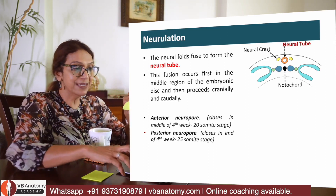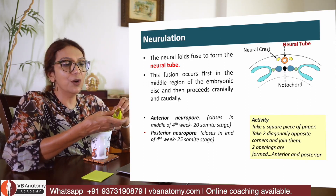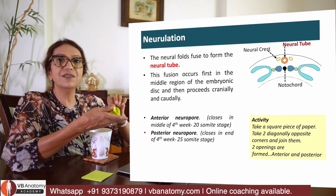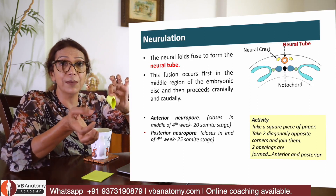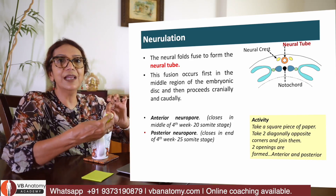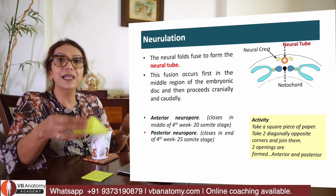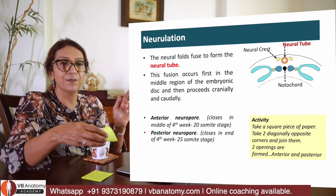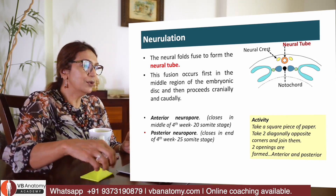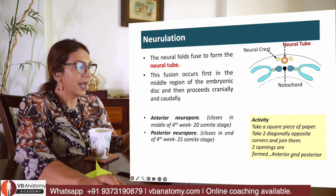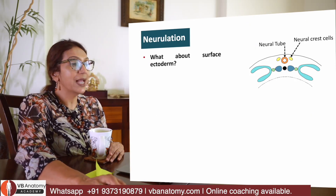This activity helps you understand how the neural tube fuses first in the middle and later anteriorly and posteriorly. It is going to fuse — anteriorly at some point, posteriorly at some time, and then finally one complete tube will be formed. The anterior neuropore closes in the middle of the fourth week and the posterior neuropore at the end of the fourth week of intrauterine life.